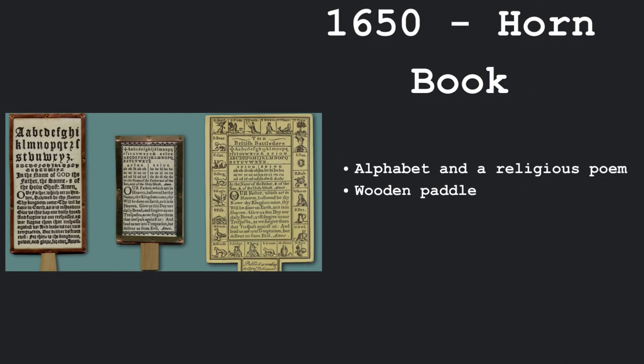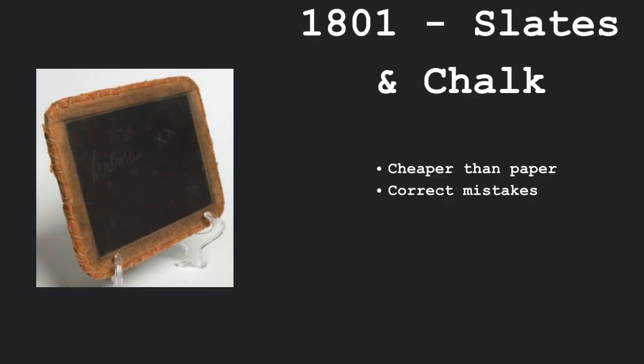In 1650, we have the horn book that was invented, which was a wooden paddle where children would copy the alphabet and a religious poem to practice their writing. In 1801, we have slates and chalk which was a cheaper writing method compared to paper, and users were also able to correct their mistakes because of the slates and chalk.